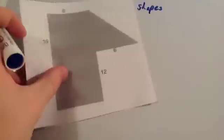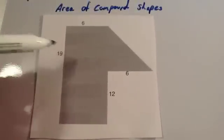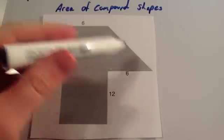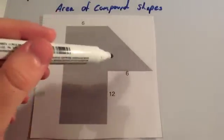If you have a look at this compound shape, you can clearly see there's a rectangle here and a right-angled triangle that's been attached to the side of it.